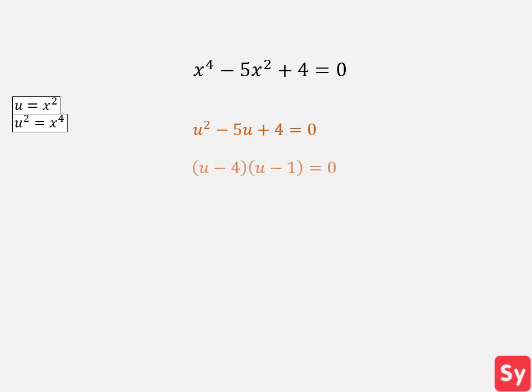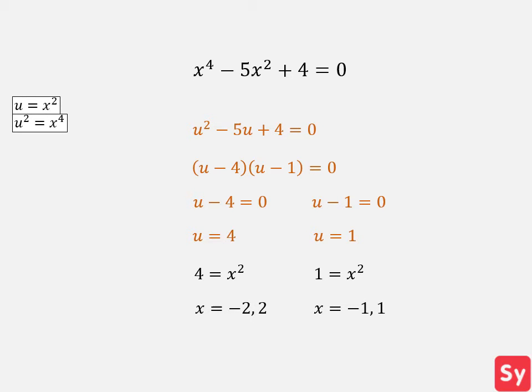We factor this quadratic expression and get u minus 4 times u minus 1 equals zero. Now we solve for u: we set u minus 4 equal to zero and u minus 1 equal to zero, so u equals 4 and u equals 1. Now we must rewrite the answer in terms of x. Remember that u equals x squared, so we set 4 equal to x squared and 1 equal to x squared. We solve for x and get x equals negative 2 and 2, and x equals negative 1 and 1 — our answer.